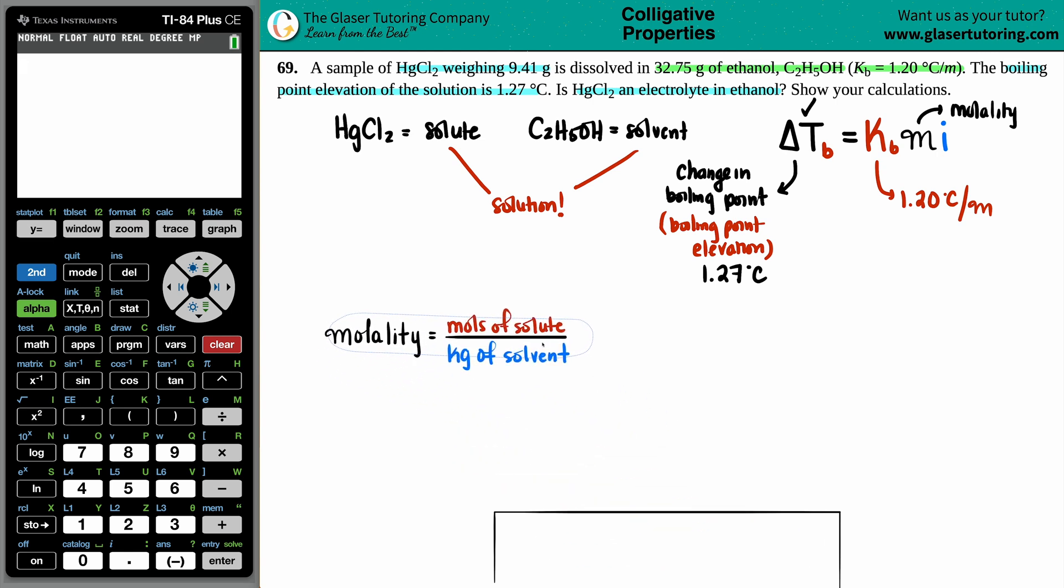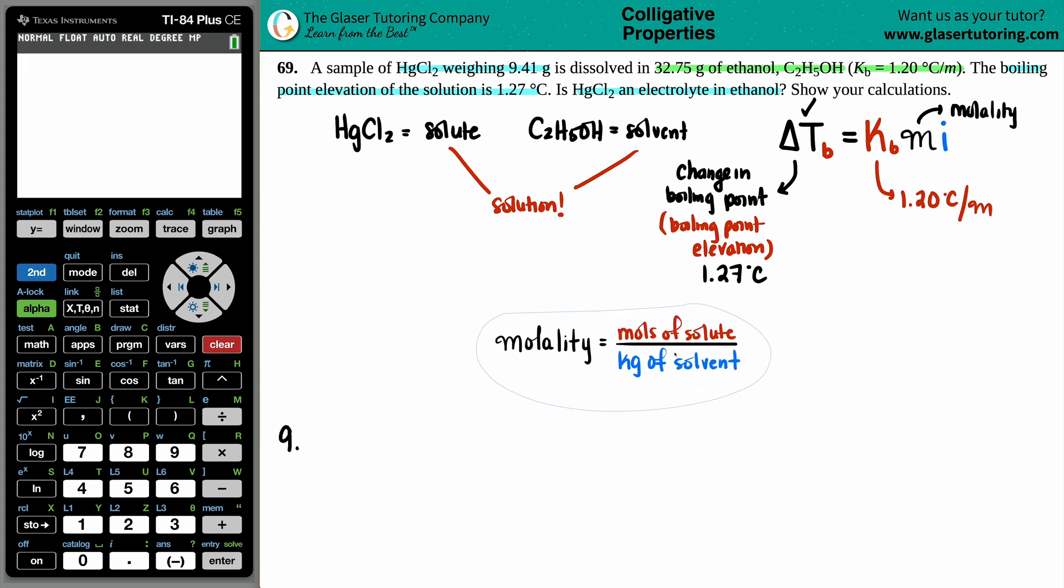Well, molality equals the moles of the solute divided by the kilograms of the solvent. We already stated that the HgCl2 is the solute. Can I find the moles? Well, they gave me 9.41 grams of HgCl2. But I don't want that, I want moles. How do I go from grams to moles? Yeah, you always divide by the molar mass.